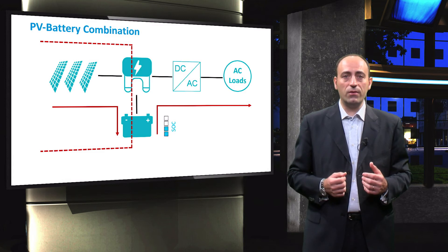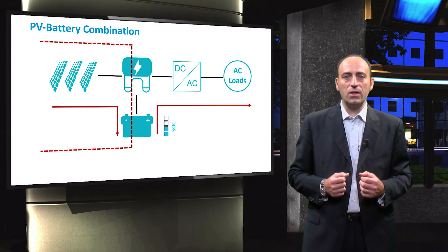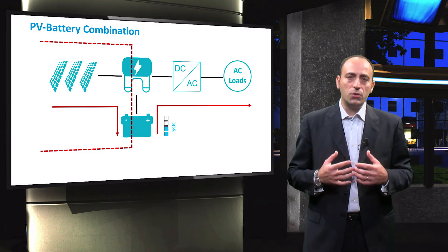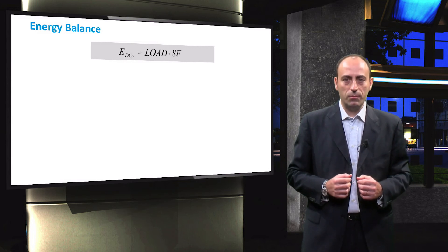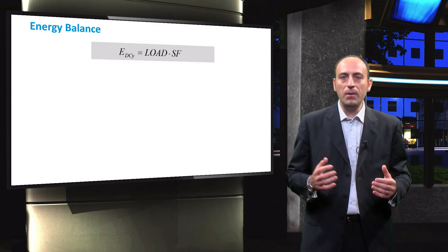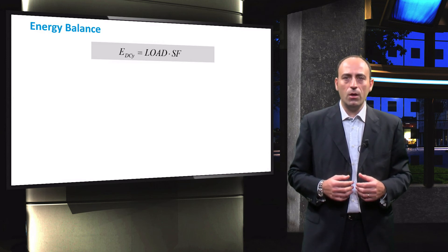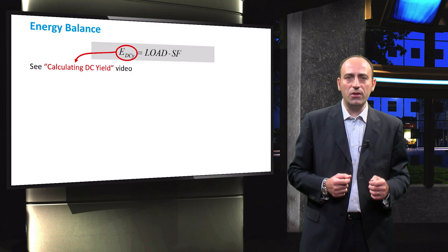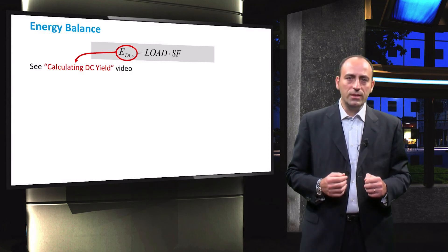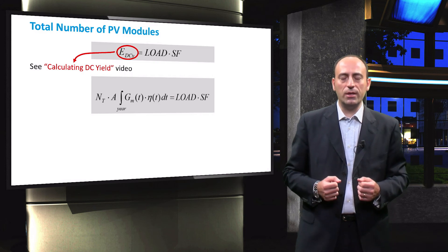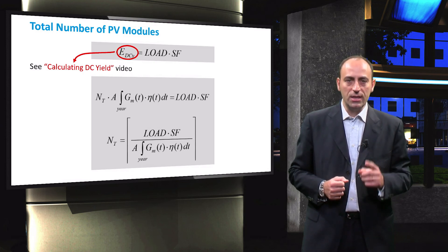After sizing the battery bank and the inverter, it is the turn of the PV array. For that, we focus on the PV-battery bank combination side of the system. In order to size the PV array, the energy balance approach is followed, similarly to the design of the grid-connected PV system. Here, the energy consumed by the loads and the PV generation are balanced over an entire year. Additionally, a sizing factor is also included. The procedure to calculate the DC energy yield from the PV is explained in detail in the video 'Calculating the DC Yield.' From this energy balance, the number of PV modules required can be calculated — it is equal to the product of the load demand and sizing factor divided by the energy generated by a single PV module.